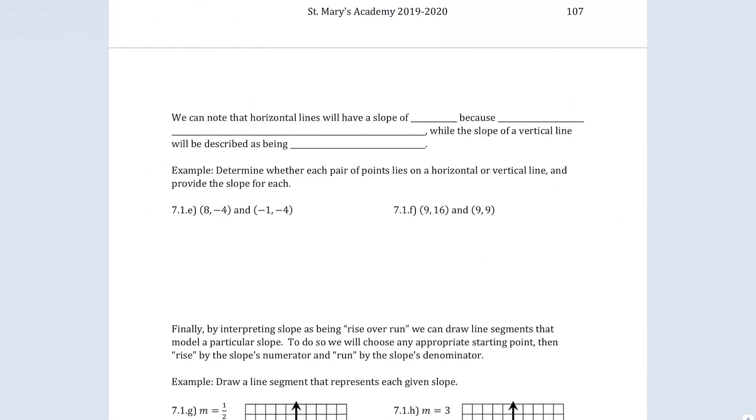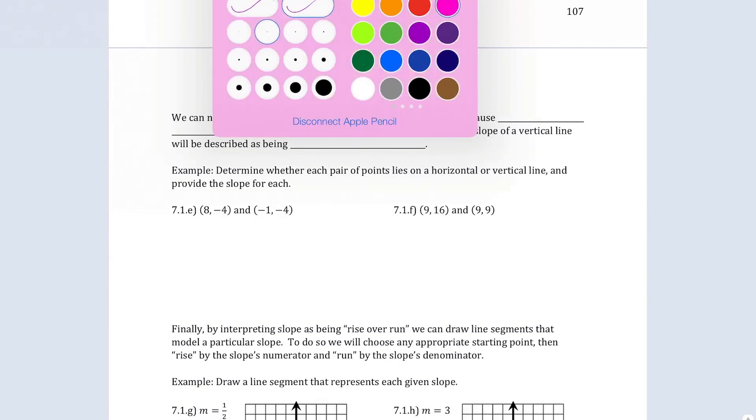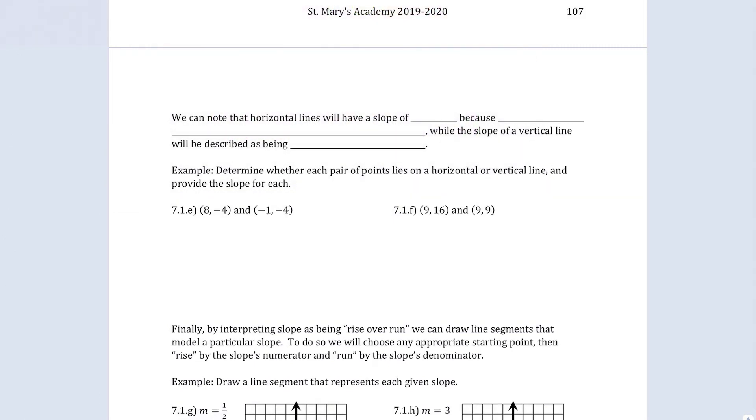All right, moving on. We also have slopes of horizontal lines. And if we look at horizontal lines, they have a slope of zero because they don't actually increase and they don't actually decrease. I.e. there's no change.